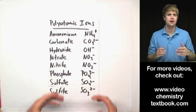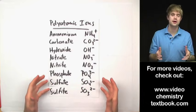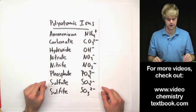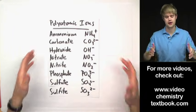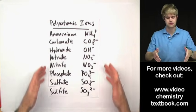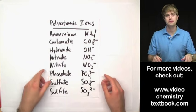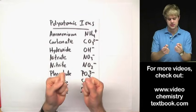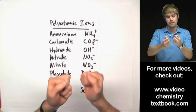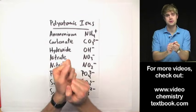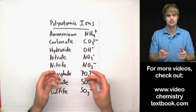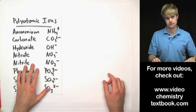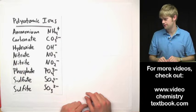Let's talk about bonding in polyatomic ions and compounds that have polyatomic ions in them. There are a whole bunch of polyatomic ions — this is just a small list of some of them. They all share one thing in common: they are a bunch of atoms connected together in a clump, and that clump has a charge. That's what a polyatomic ion is.